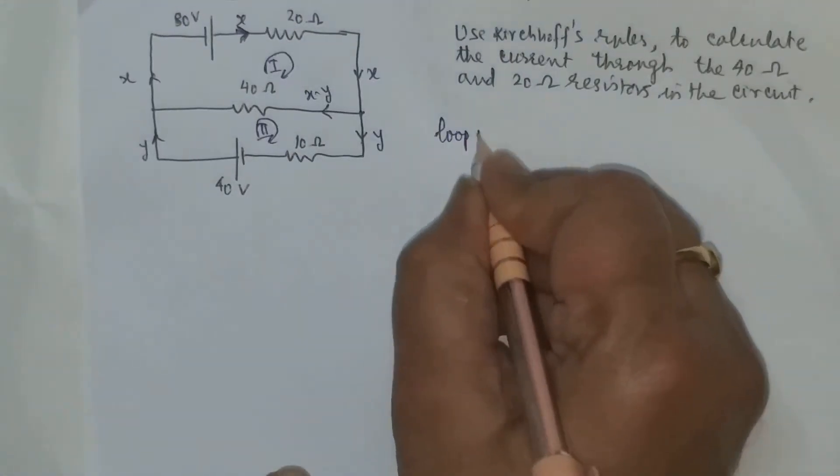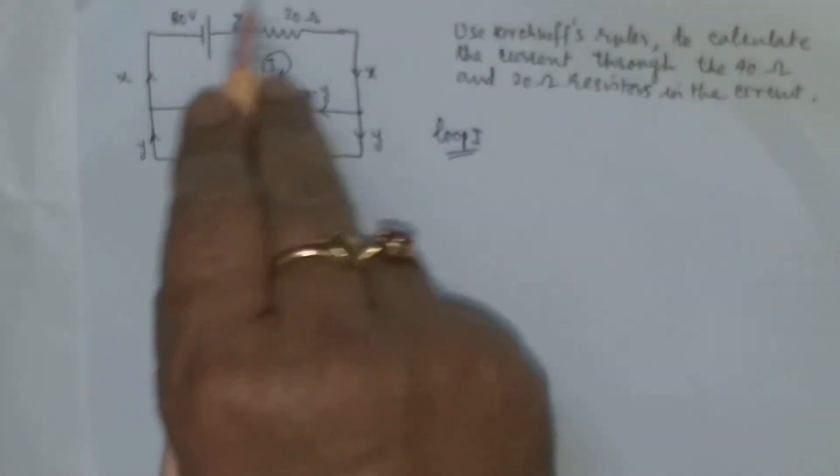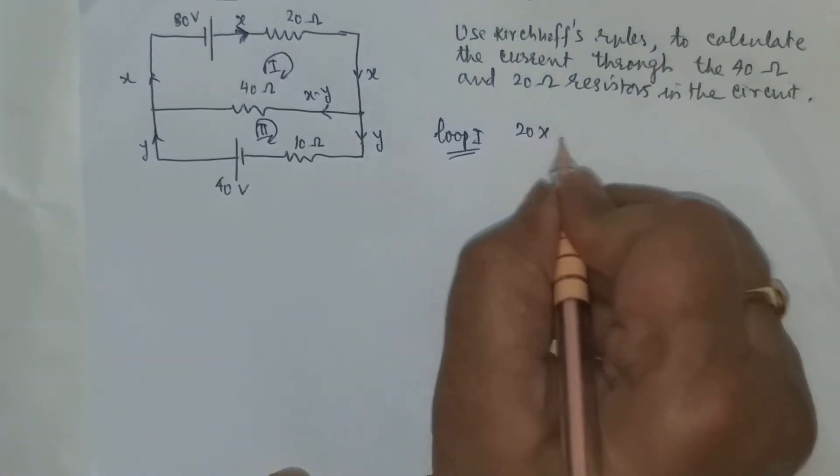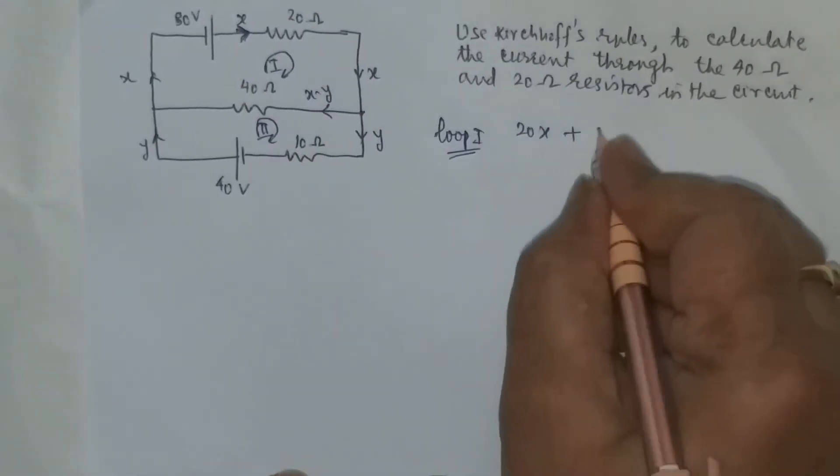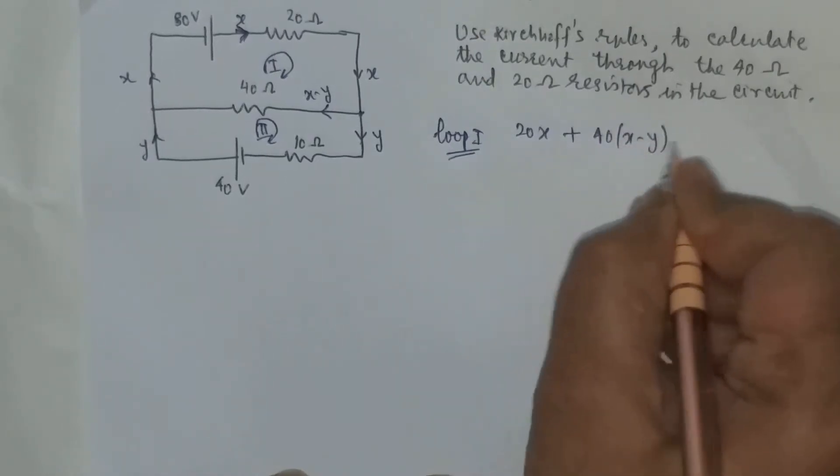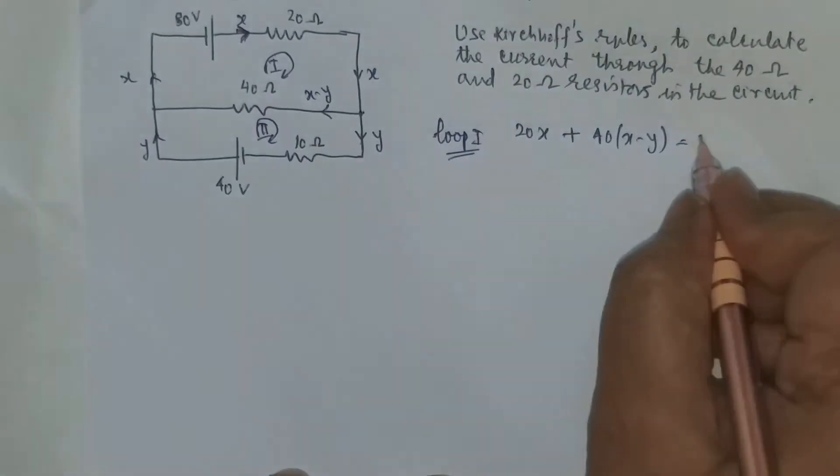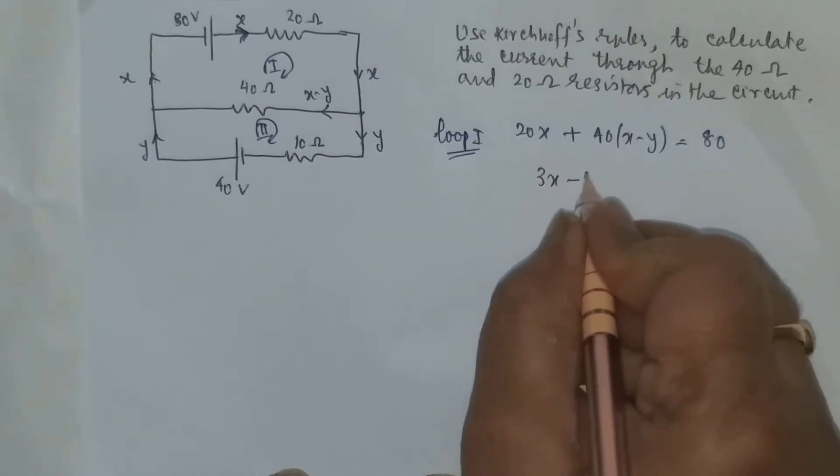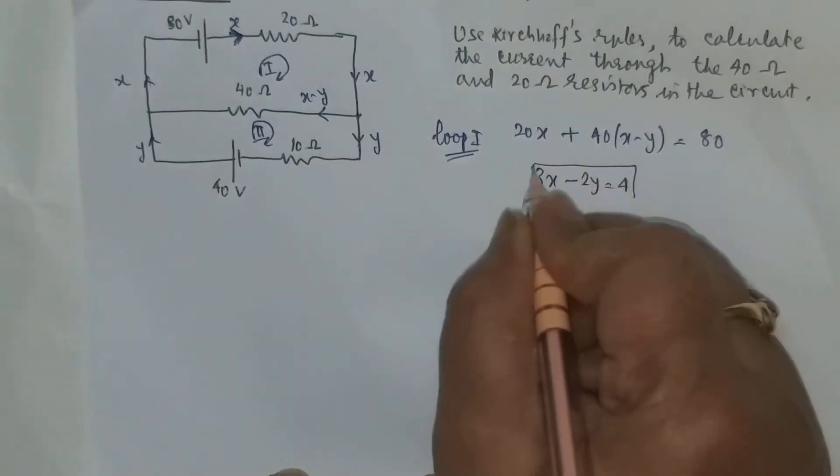So what I do in loop one, I write the equation. I move in this direction: 20x plus 40 times (x minus y), and now this is the algebraic sum of the EMF which is 80. So we have 3x minus 2y is equal to 4.